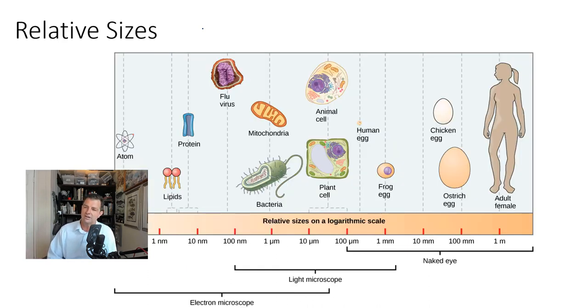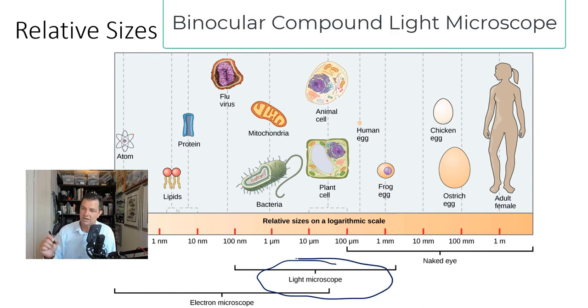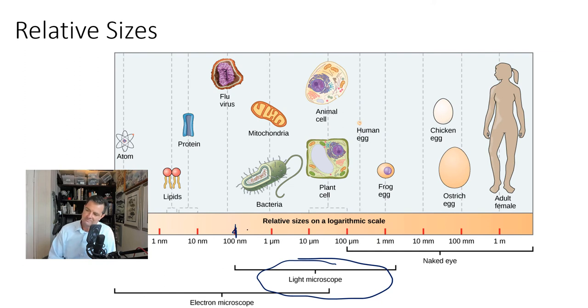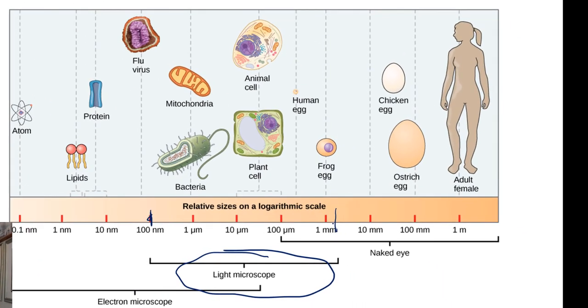Relative to size, there's a couple things we could talk about here. If we look through our microscopes, we typically have in class what we call a binocular compound light microscope. That's what you see here in terms of the light microscope. With our microscopes, we can see things that are as small as about 100 nanometers to as large as maybe three millimeters or so.